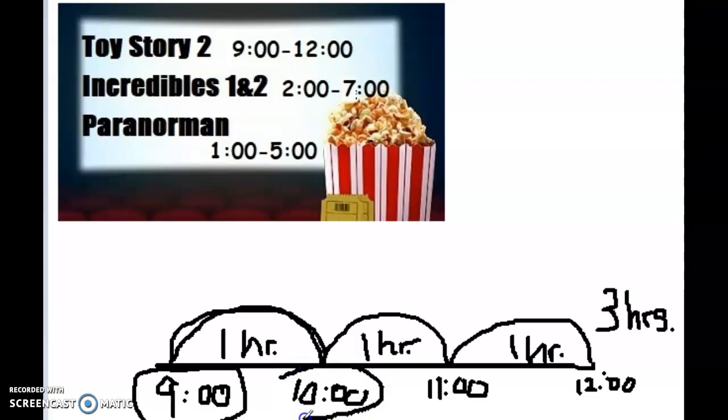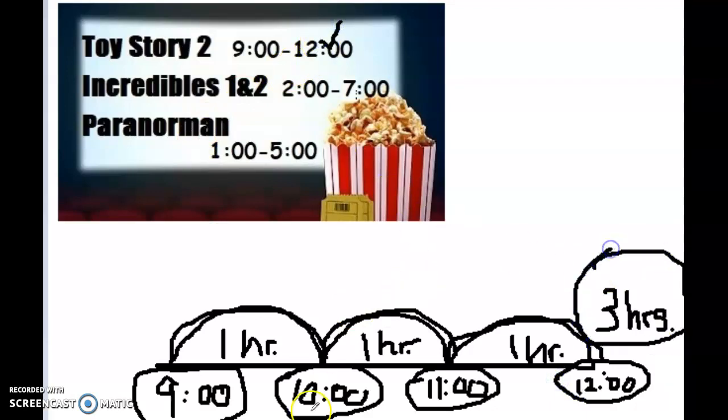So from 9 o'clock to 10 o'clock is one hour. From 10 o'clock to 11 o'clock is another hour. And finally, from 11 o'clock to 12 o'clock brings us to our end time of the film and a final time of three hours.